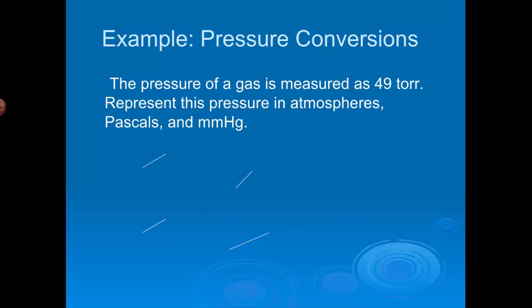So here's an example. We have a pressure of a gas measured as 49 torr. So go ahead and calculate the different units. So figure out what it is. What is 49 torr in atmospheres, pascals, and millimeters of mercury. So go ahead and stop the video and come back.